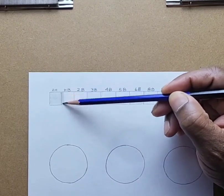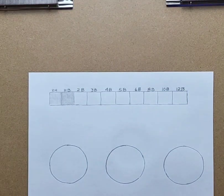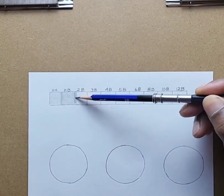The 2H is a hard pencil. It sometimes can leave indentations in your paper because it has a lot of clay, so the tip is very, very hard.